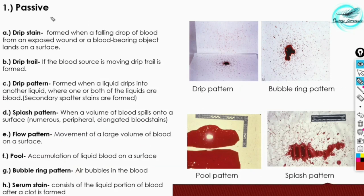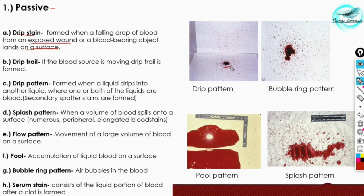Passive blood stain patterns are formed in a passive state — normally, when blood is deposited on a surface. The first subtype is the drip stain, formed when a falling drop of blood from an exposed wound or a blood-bearing object lands on a surface. You can see in this picture an example of a drip pattern.